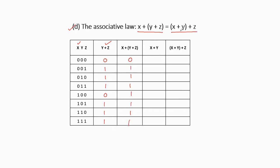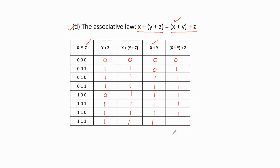For the RHS, perform the bracket x+y — OR of x and y — focusing on x and y columns. Then OR this (x+y) with z. The results give: 0,0,1,1,1,1,1,1 for x+y, then 0,1,1,1,1,1,1,1 for (x+y)+z. Checking LHS and RHS, both are the same, so this identity is also satisfied using the truth table.